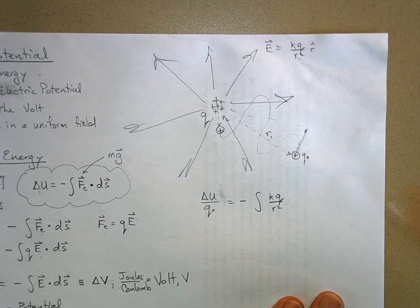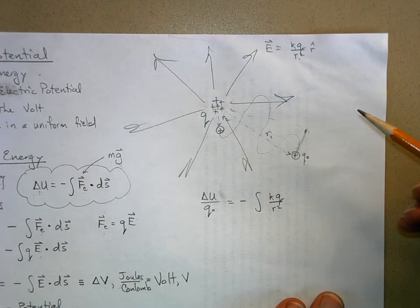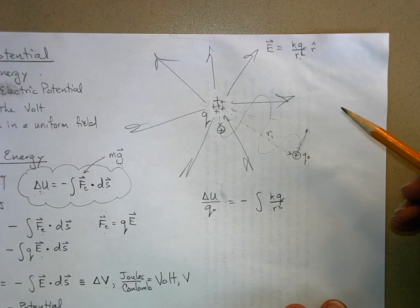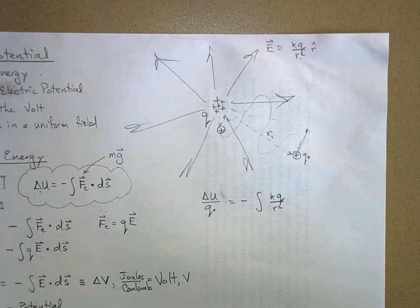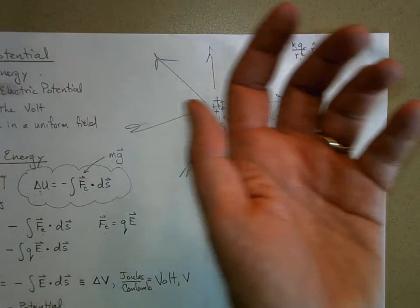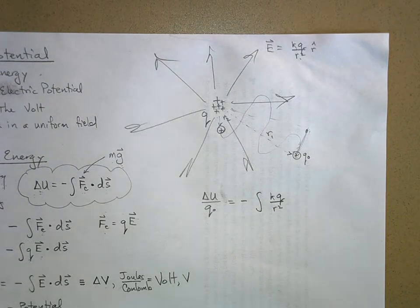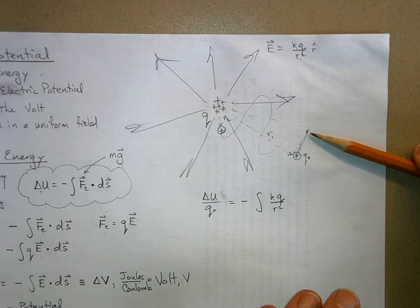If I didn't do any work against the field, I didn't change the electric potential. It's like carrying something in a gravity field but holding it level — if I carry a book and move it horizontally without changing its height, I'm not changing the gravitational potential energy. Same thing here: moving at the same radius from the charge doesn't change anything.